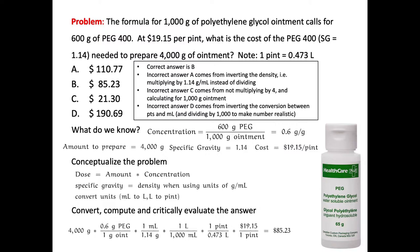Continuing: convert milliliters to liters by dividing by 1,000, then convert liters to pints using the conversion factor of 1 pint per 0.473 liters — liters cancel, giving pints. Finally, multiply pints by $19.15 per pint — pints cancel — giving the cost in dollars. Doing all the math across: 4,000 times 0.6 divided by 1.14 divided by 1,000 divided by 0.473 times $19.15 gives a final cost of $85.23 to prepare 4,000 grams of ointment.